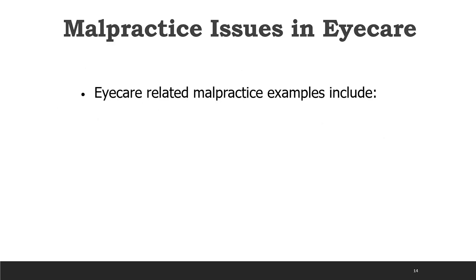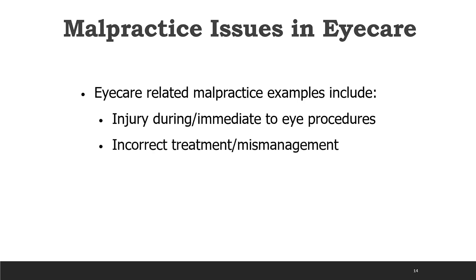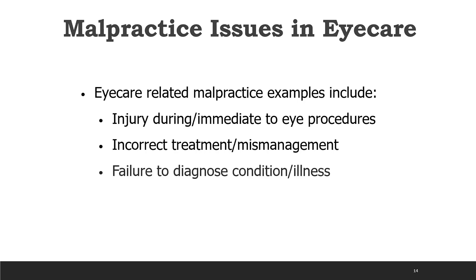There are several sub-examples of malpractice to consider. One is injury during an eye procedure, such as improperly inserting a punctal plug. There is also incorrect treatment or mismanagement — for example, giving oral prednisone after a diagnosis of optic neuritis when we know that should be injection. And then the big one is failing to diagnose a condition, which comes along with silent conditions like glaucoma and keratoconus, which we'll be speaking about a lot today.